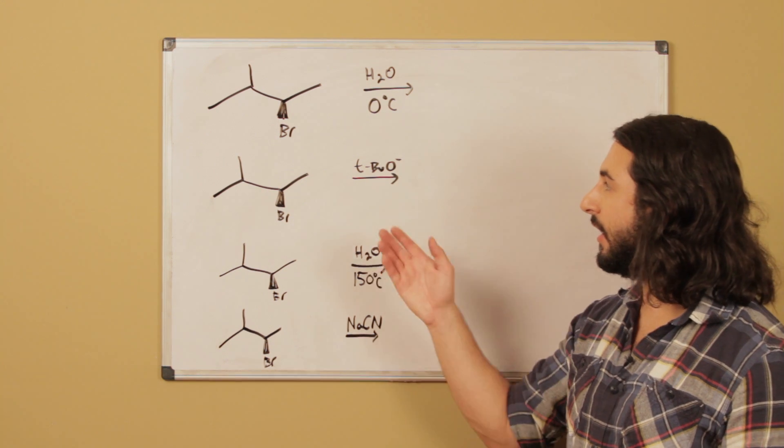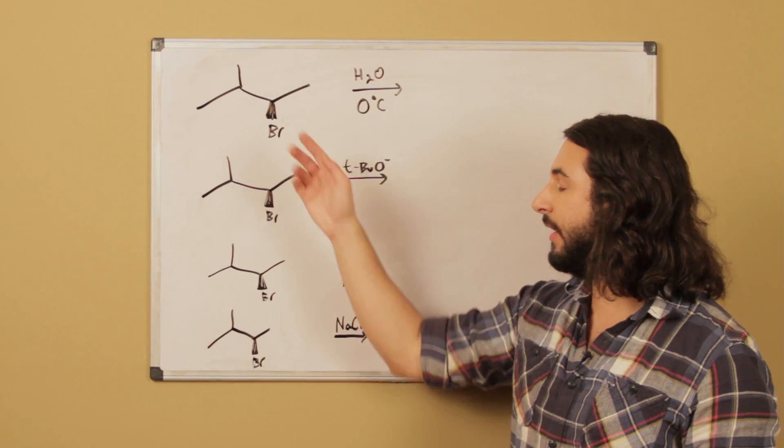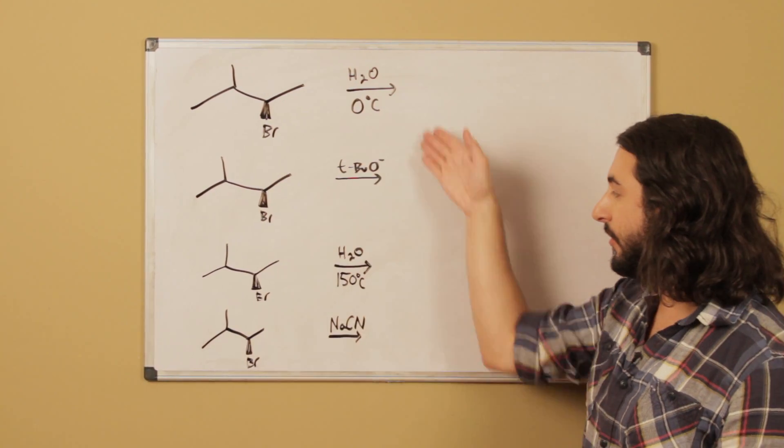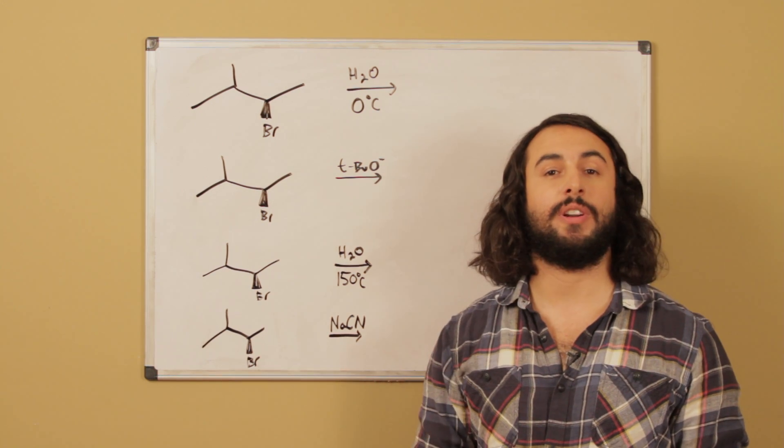Okay today we're going to look at this compound. We've got this alkyl bromide and we're going to have this alkyl bromide undergo four different transformations, these are four different reaction conditions we're going to want to try to see what we can get.